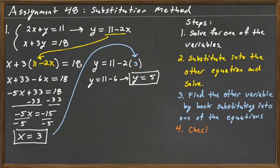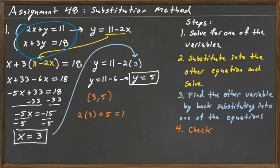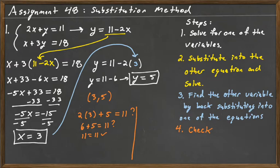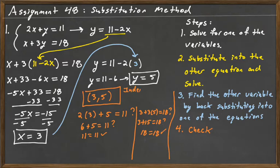So now you have your ordered pair, 3 comma 5. Step four, we need to check in both equations. So checking 3, 5 in the original equations: 2 times 3 plus 5 — is that equal to 11? 6 plus 5, that's definitely equal to 11, so 11 equals 11. It checks out. Now the other equation, x plus 3y equals 18: does 3 plus 3 times 5 equal 18? 3 plus 15 equals 18, so 18 equals 18. This is a solution — we have one solution, and we would call this an independent system.